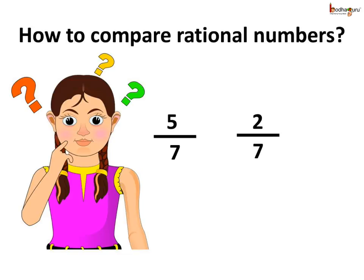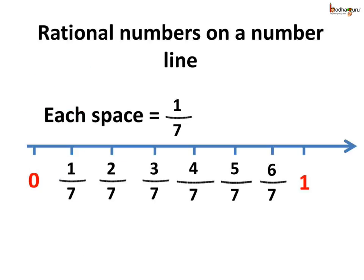Now how to compare the rational numbers 5 by 7 and 2 by 7? Both of these lie between 0 and 1. So to show a rational number between 0 and 1 which has a denominator of 7, we divide the space between 0 and 1 into 7 equal parts, starting from 0 moving towards the right at equal intervals. We can put 1 by 7, 2 by 7, 3 by 7, 4 by 7, 5 by 7, 6 by 7, and 1, which is actually 7 by 7.